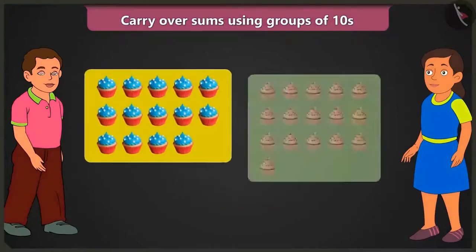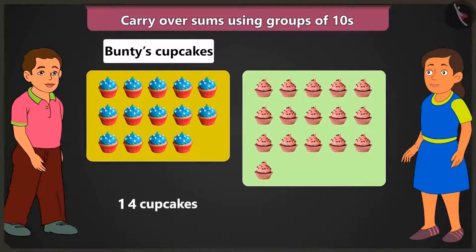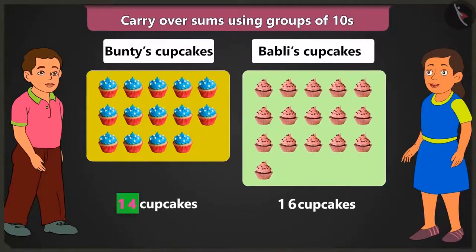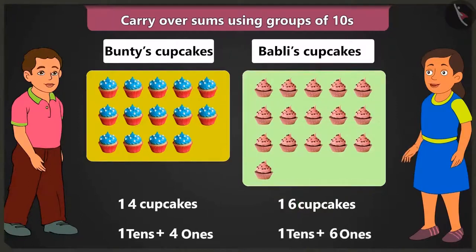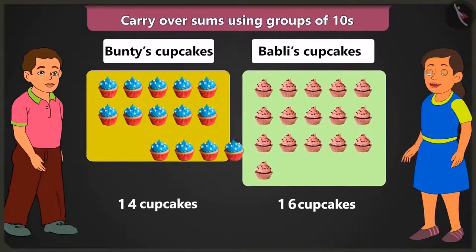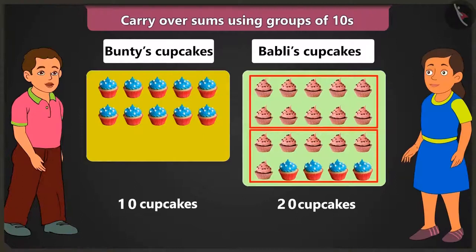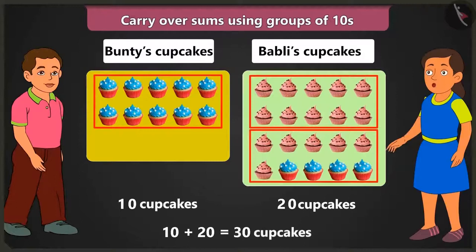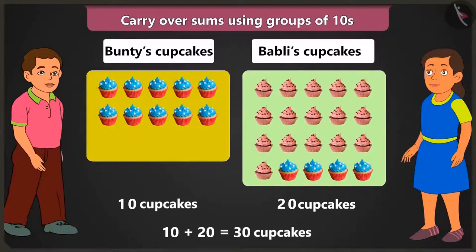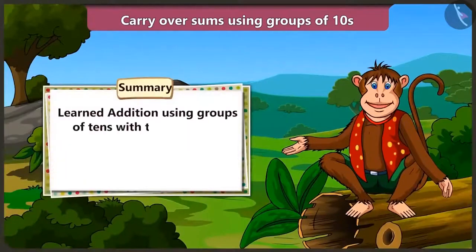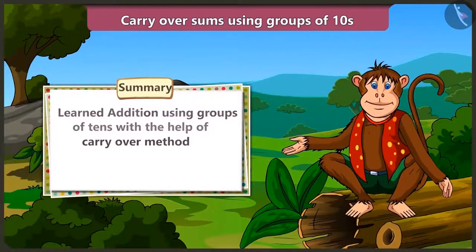Let us see another example. Look Bubbly, I have fourteen cupcakes and you have sixteen cupcakes. So how many cupcakes do we have in all? Fourteen means one ten and four ones cupcakes, and for sixteen there is one ten and six ones cupcakes. If you give me four of your cupcakes then you will be left with one ten cupcakes, making two tens that are twenty cupcakes. So your tens and my twenty will add up to three tens that are thirty cupcakes in total. So today in this video, with the help of some examples, we learned how to add using groups of tens with the carryover method. In the next video we will learn to play an interesting game related to the addition of two-digit numbers.